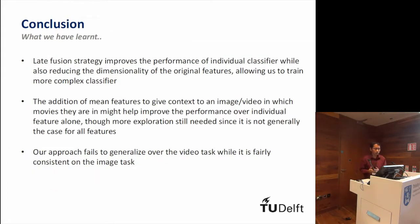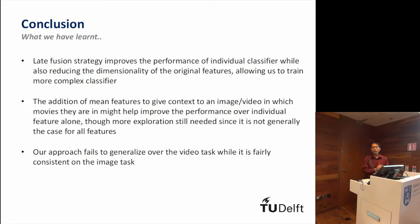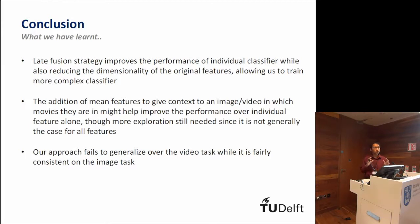In conclusion, what we learned is that the late fusion strategy improves the performance of individual classifiers while also reducing dimensionality and allowing different classifiers to be tried — which was important given our limited computational resources, since applying SVM on the full feature set takes a long time. The addition of mean features also seems promising for giving context about the movie in which an image or video is recorded. Finally, our approach fails to generalize over the video subtask, probably because we failed to capture the meaningful features available there. That's my presentation. Thank you.